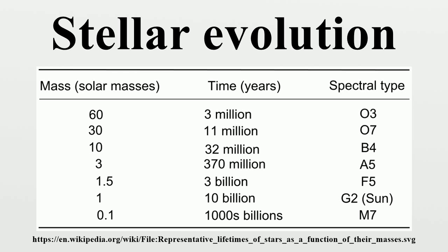Stellar evolution starts with the gravitational collapse of a giant molecular cloud. Typical giant molecular clouds are roughly 100 light-years across and contain up to 6 million solar masses. As it collapses, a giant molecular cloud breaks into smaller and smaller pieces. In each of these fragments, the collapsing gas releases gravitational potential energy as heat. As its temperature and pressure increase, a fragment condenses into a rotating sphere of superhot gas known as a protostar.